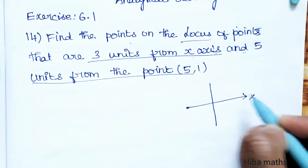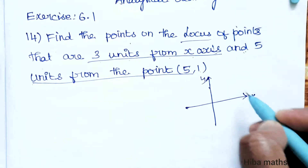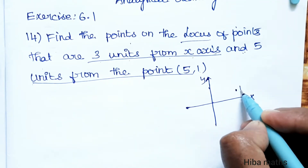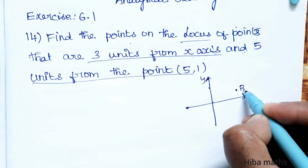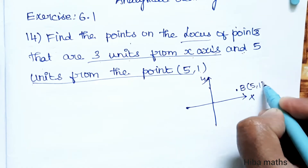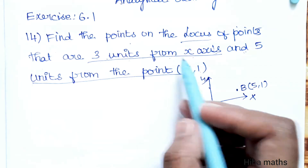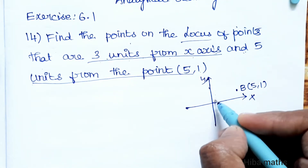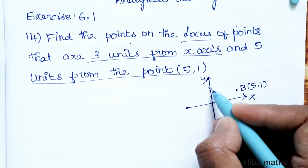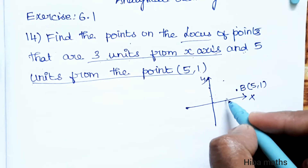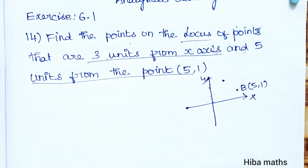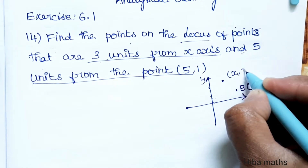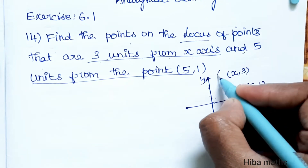This is the x-axis, this is the y-axis. Here is the point B at (5,1). Now, 3 units from the x-axis — counting one, two, three — three units from the x-axis. So x is the value and y is the value. Now I am going to point A.